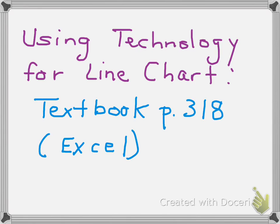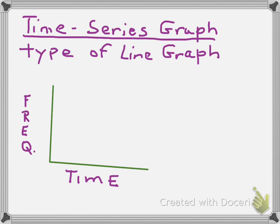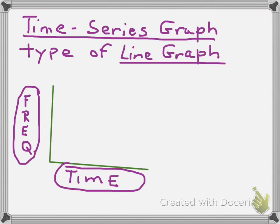Of course, you will probably be using technology in order to make your line graph or line chart, and it explains how to do that in your textbook on page 318. And they, again, use Excel. The last graph that we're going to talk about in this section is called a time series graph. And a time series graph is just a special type of a line graph. So the only difference there is that in this particular type of a line graph, your horizontal axis represents some unit of time. And your frequency of some variable that you're looking at is still represented on this vertical axis.